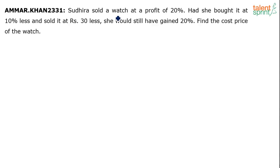So basically Sudhira sold a watch at a profit of 20%. Had she, means if she buys it at 10% less, that means if the cost price is 10% less and if it is sold at rupees 30 less, that means selling price is 30 less, she would have still gained the same 20%. Find the cost price of the watch.